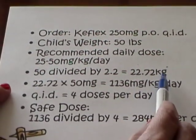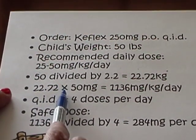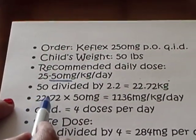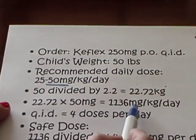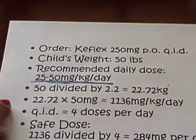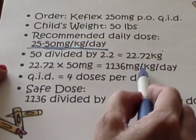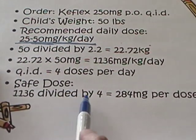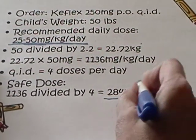We do not round that. We leave it and calculate with it. We take our weight in kilograms, 22.72, and multiply it by the larger of the numbers in the dose range from our drug book. So 22.72 times 50 milligrams equals 1,136 milligrams per kilogram per day. Be very careful at how your drug book gives you your safe dosage. In this instance, we would have to see how many doses we're giving in a day or in 24 hours. QID is four doses per day. So we would take 1,136 divided by four. That would be 284 milligrams per dose as a safe amount.